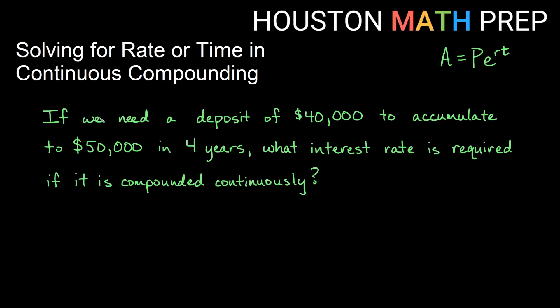Let's work through just one more of these. Let's say we need a deposit we put in, $40,000. We need it to accumulate to $50,000 and we have to have it happen in four years. So what interest rate do we go shopping for? That's required to get us from $40,000 to $50,000 in four years if we're compounding continuously.